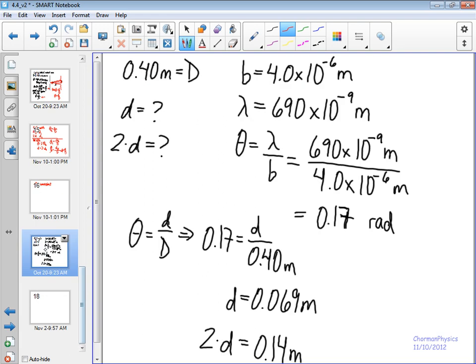So if we do a quick example problem, we're told that light passes through a single slit and shines on a flat screen that's located 0.4 meters away, that's big D. We're asked to find the width. We're told the width of the slit is 4 times 10 to the negative 6 meters, so that's b, and the light that we're using has a wavelength of 690 nanometers, 690 times 10 to the negative 9 meters.